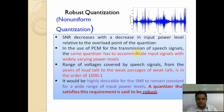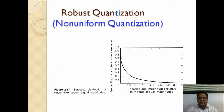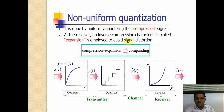In robust quantization, the SNR decreases as the input power level decreases relative to the overload point of the quantizer. Non-uniform quantization is achieved by uniformly quantizing the compressed signal — a compressor plus expander — which is called companding. The compressor compresses the signal at the input level and the expander expands it at the output level. The process is: compress the signal, quantize it, then expand the signal, resulting in a very low error rate.